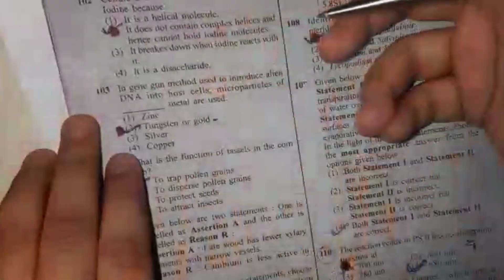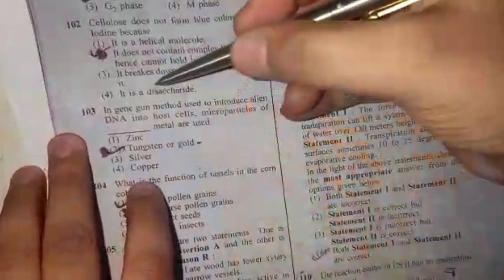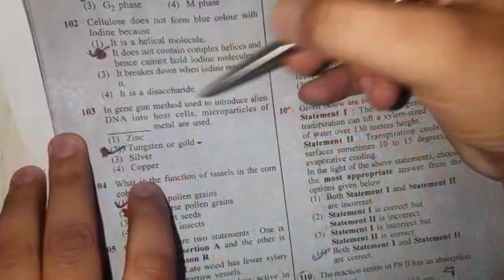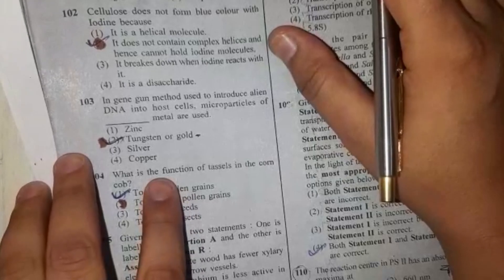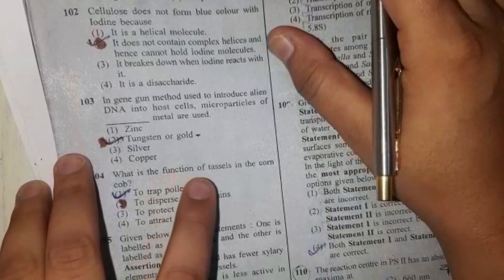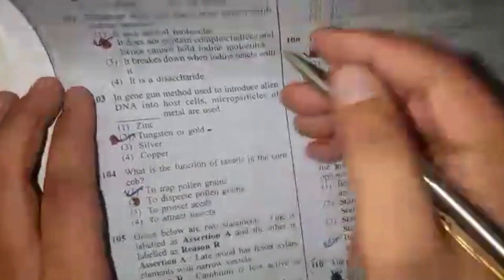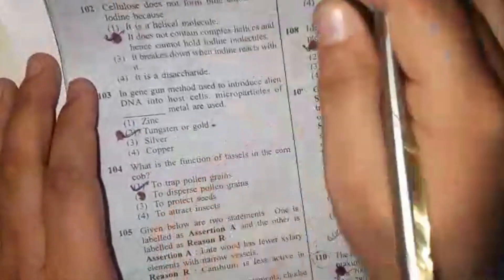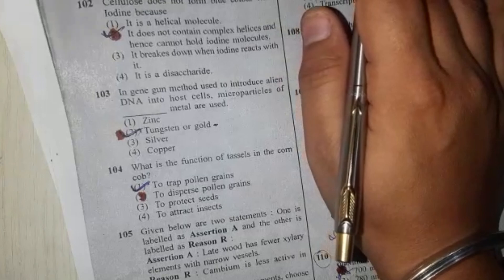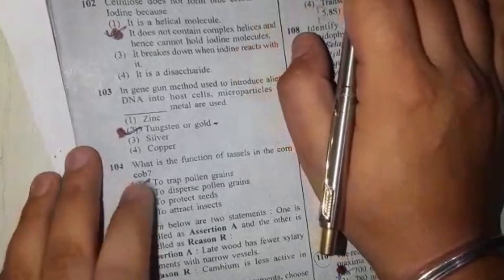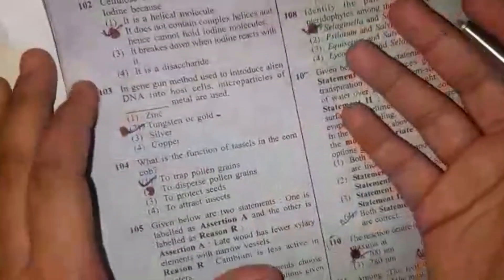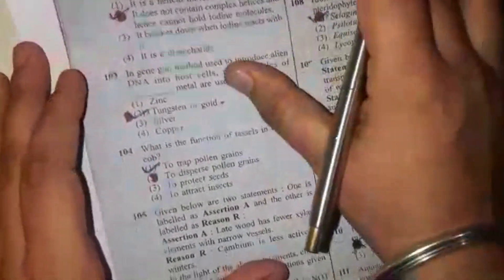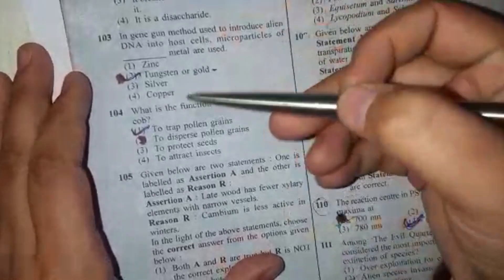Next question is: Gene gun method used to introduce alien DNA into host cells - microparticles of which metals are used? So in gene gun method, tungsten and gold metal particles are used to bombard and enter the DNA which we call recombinant DNA.